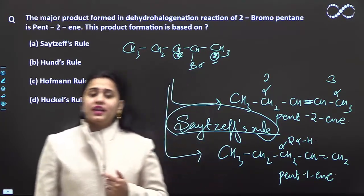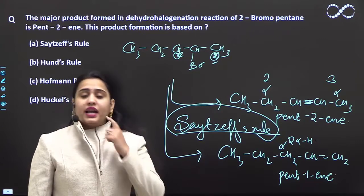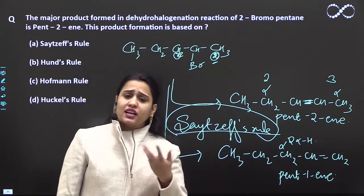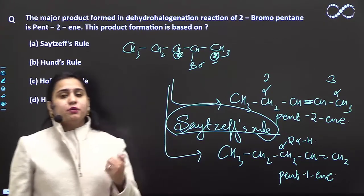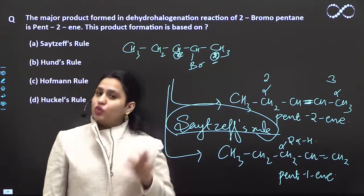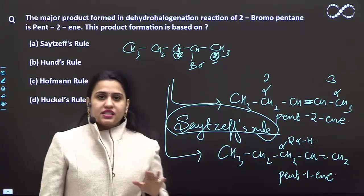So Saytzeff's rule says that if you have elimination or dehydrohalogenation, more highly substituted alkenes will be formed. If there is another factor at work, then it is a different thing.